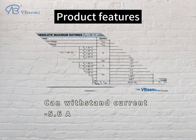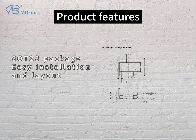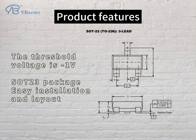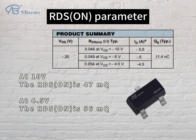Product features: withstand voltage up to minus 30V, can withstand current of minus 5.6A, threshold voltage is minus 1V, SOT-23 package for easy installation and layout. RDS-ON parameter: at 10V the RDS-ON is 47mΩ, and at 4.5V the RDS-ON is 56mΩ.